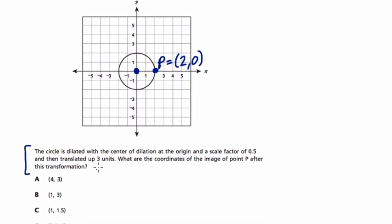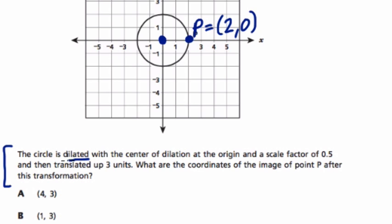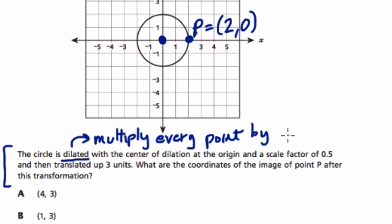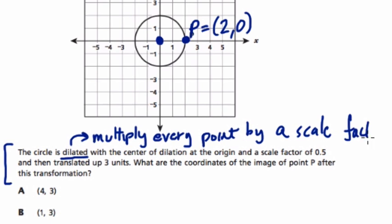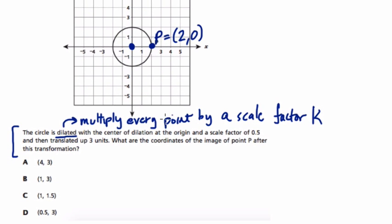Now let's read this part here. The circle is dilated. That means it's either enlarged or reduced. Dilated with the center of dilation about the origin. That means we multiply every point in our graph by a scale factor. It's a number that we multiply by. And in general, scale factors, I like to use the variable K. So dilation means we're going to multiply every point by some number K, and that's going to either make the shape larger or smaller.